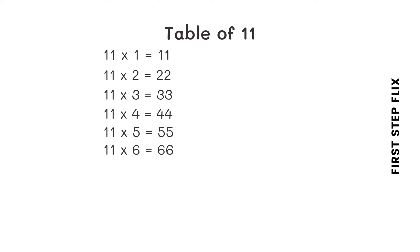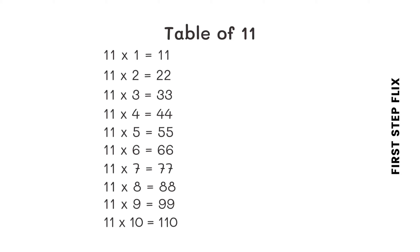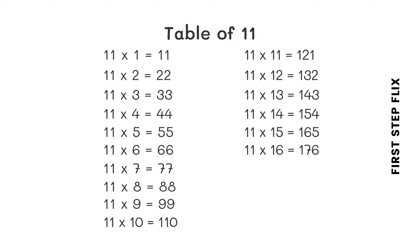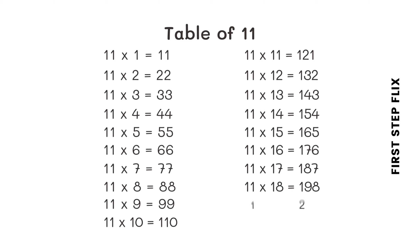11 sixes are 66. 11 sevens are 77. 11 eights are 88. 11 nines are 99. 11 tens are 110. 11 elevens are 121. 11 twelves are 132. 11 thirteens are 143. 11 fourteens are 154. 11 fifteens are 165. 11 sixteens are 176. 11 seventeens are 187. 11 eighteens are 198. 11 nineteens are 209. 11 twenties are 220.